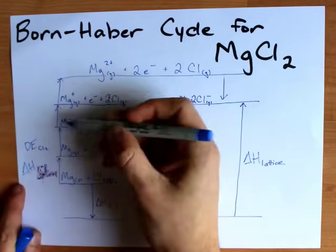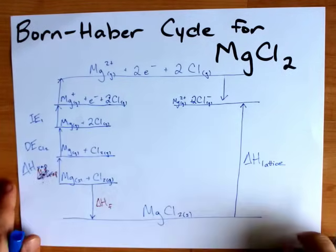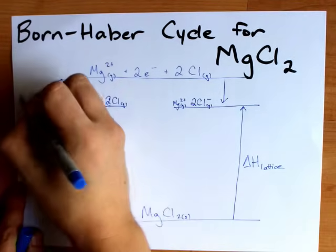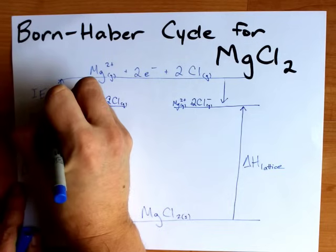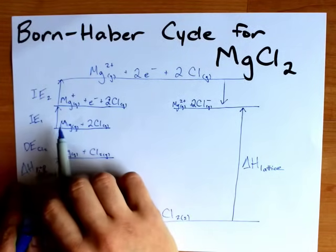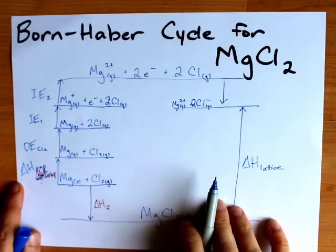Now, to convert Mg gas to Mg⁺, we need the first ionization energy of magnesium. And to remove the second electron, we need the second ionization energy for magnesium. Ionization energy being the energy required to remove an electron from one mole of magnesium.